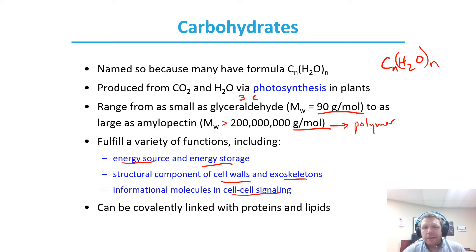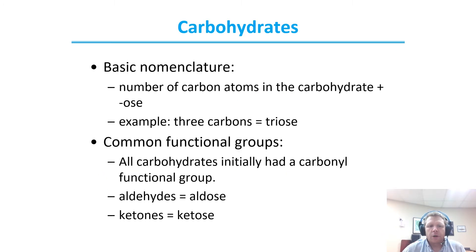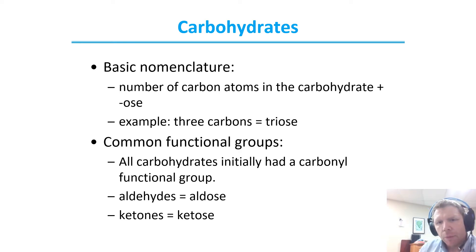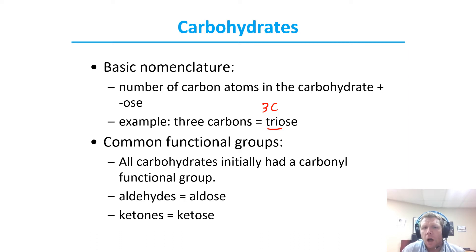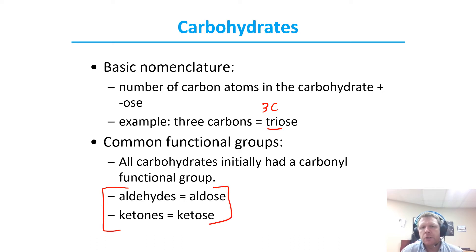Carbohydrates can be covalently linked with proteins and lipids as well. What you need to know about carbohydrates is the basic nomenclature: the number of carbons in a carbohydrate plus the suffix -ose. For instance, the general name triose has three carbons and that suffix -ose indicating that it is a sugar. For common functional groups, carbohydrates break down into two major categories — those having aldehydes and those having ketones — therefore they are aldoses and ketoses.